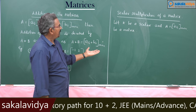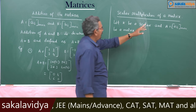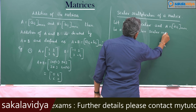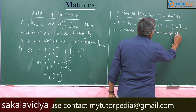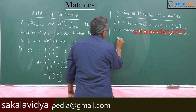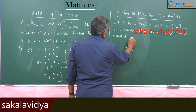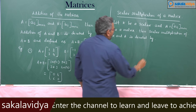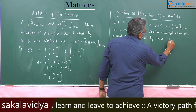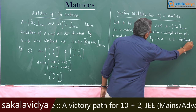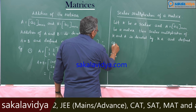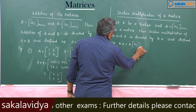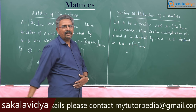Then the scalar multiplication of K and A is denoted by KA, and defined as KA is equal to K times a_ij, m by n, which means each and every element of that matrix is multiplied by K.